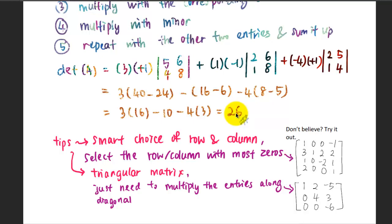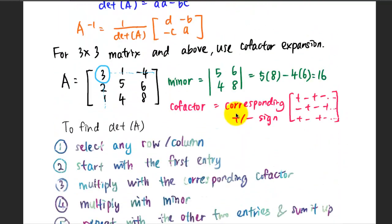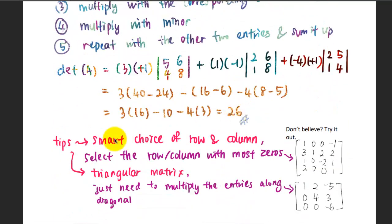There are two smart tips to consider when deciding the determinant. The first tip is the smart choice of row and column. Go for the row or column with the most number of zeros. Why don't you try out this example here. We have a matrix of 4 by 4 and some rows and columns have quite a lot of zeros. You can try to select these.